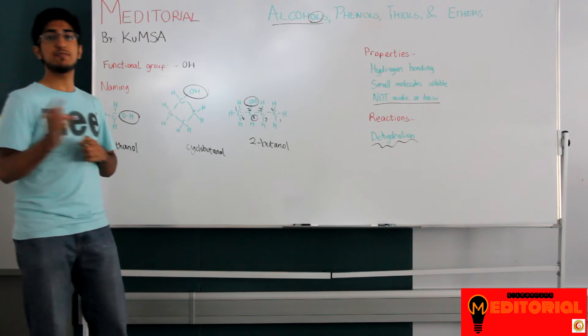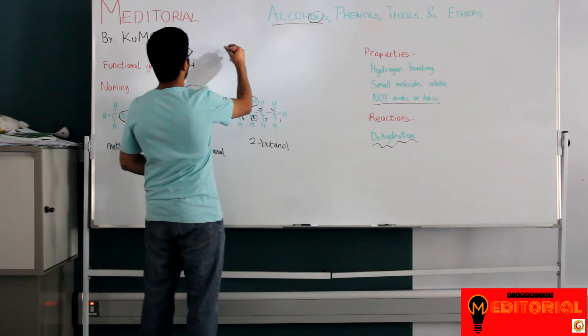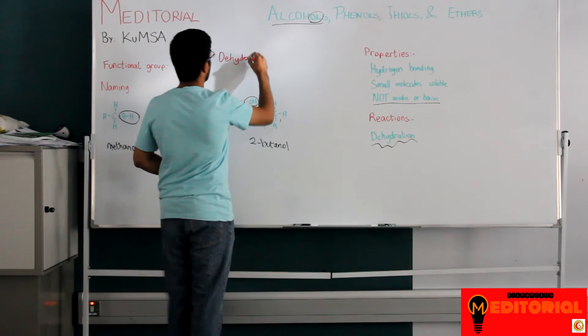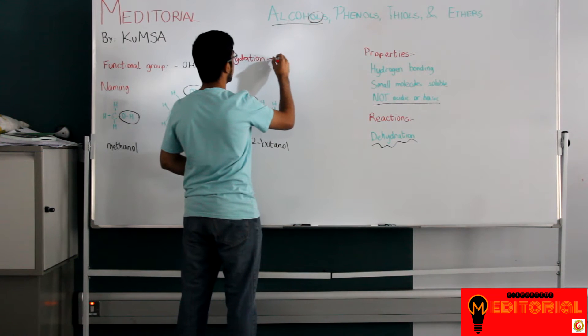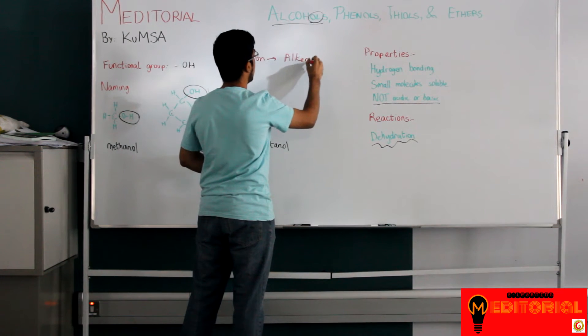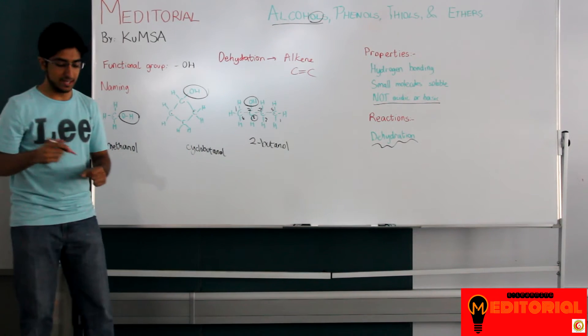And the result of dehydration is an alkene. If you haven't watched our video yet on alkenes, make sure you check that out. Dehydration results in alkenes. Alkenes are the hydrocarbons that have the functional group of a double bond. That was your functional group. It had a double bond.